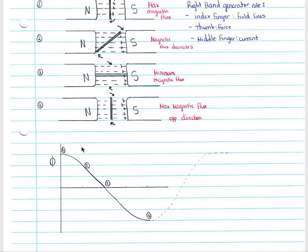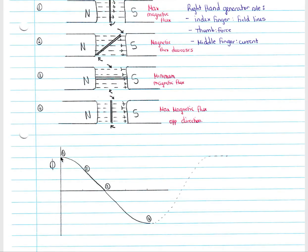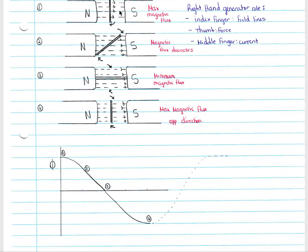On the flux graph: at point one, flux is maximum. At point two, flux is decreasing. At point three, flux is zero because the normal is at 90 degrees to the field lines and cos(90°) = 0. At point four, after 180 degrees of rotation, flux reaches a maximum again but below the x-axis, indicating it is now in the opposite direction. A further 180-degree rotation returns us to the original state.